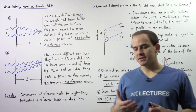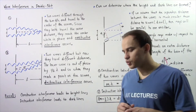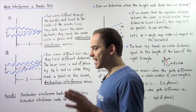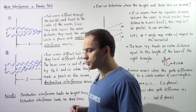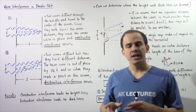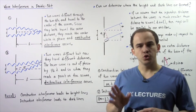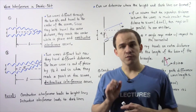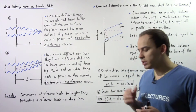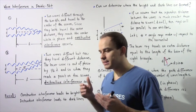The double slit experiment basically showed us that light travels as waves and not as particles. We had a screen with two openings, two very small slits. And when light traveled through those slits,